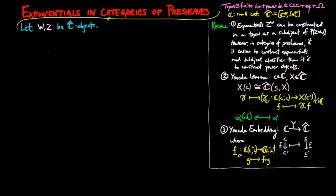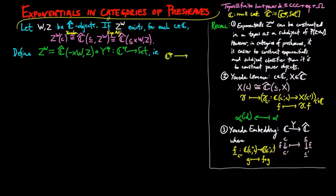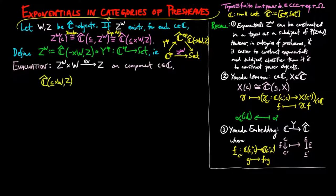Let w and z be c-hat objects. If z to the w exists, then for each little c in c, the set of c figures in z to the w is naturally isomorphic to the set of c-hat morphisms from underline c cross w to z, by the Yoneda lemma and the definition of exponential adjunction. So we define z to the w as the following pre-sheaf, where y-op is the Yoneda embedding of c-op into the opposite category of c-hat. The evaluation morphism on component little c in c takes a natural transformation alpha from underline c cross w to z, and a c-figure little w of w, to the c-figure of z given by alpha evaluated on identity c and w at component c.